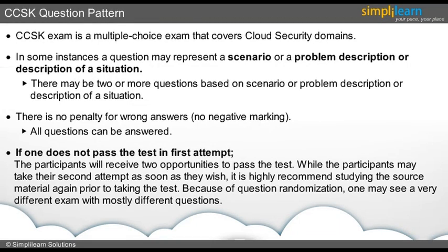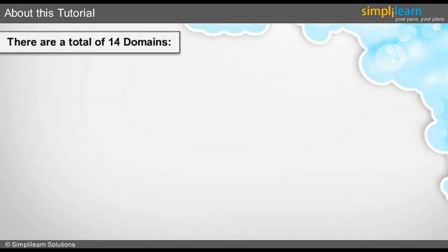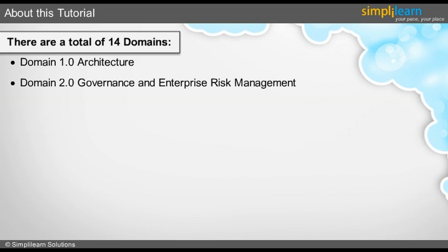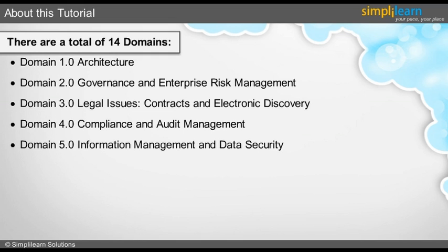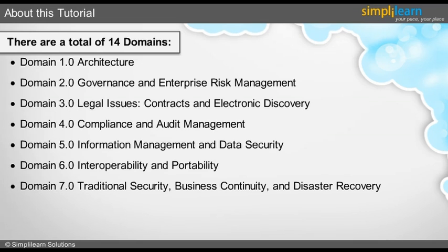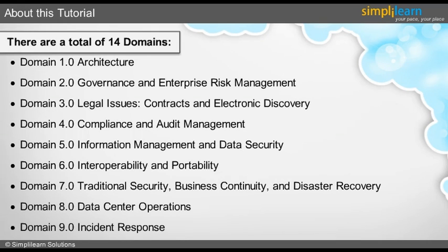This tutorial comprises a total of 14 domains, of which this is the introductory one. Apart from introduction to CCSK, we have domains such as cloud architecture, governance and enterprise risk management, legal issues such as contracts and electronic discovery, compliance and audit management, information management and data security, interoperability and portability, traditional security, business continuity and disaster recovery, data center operations, and also incident response.